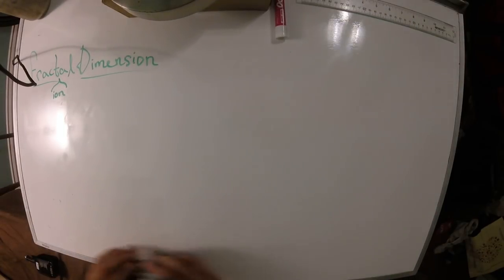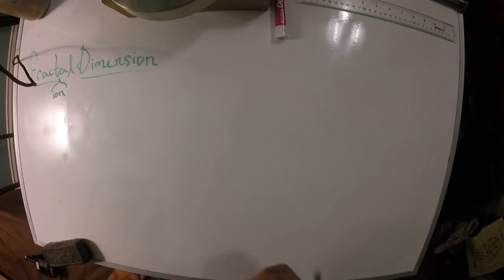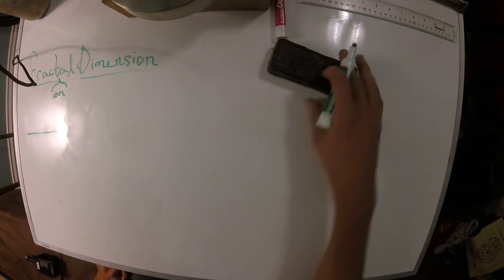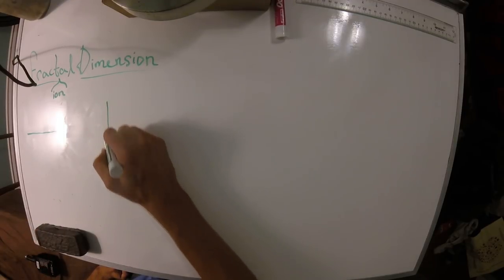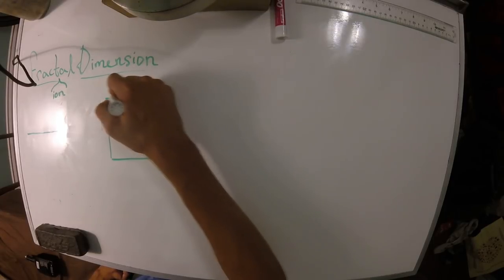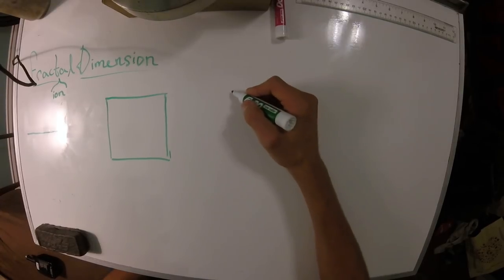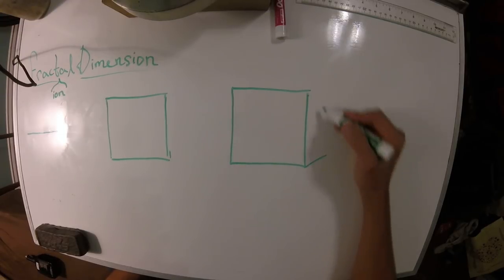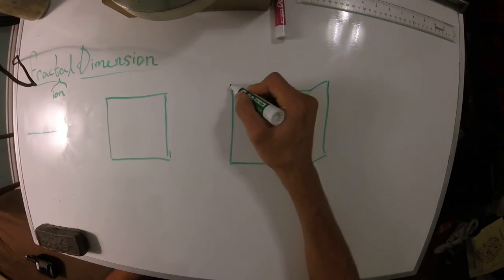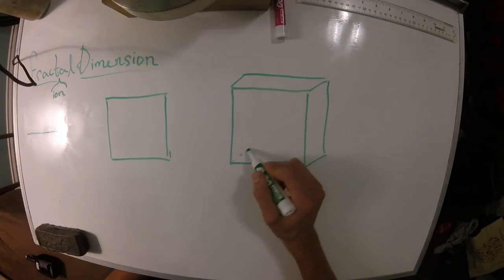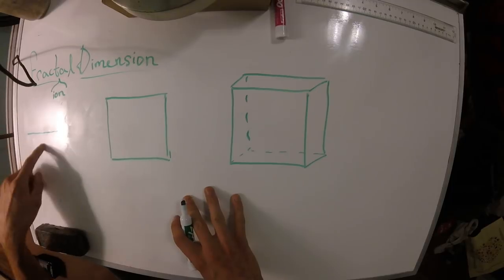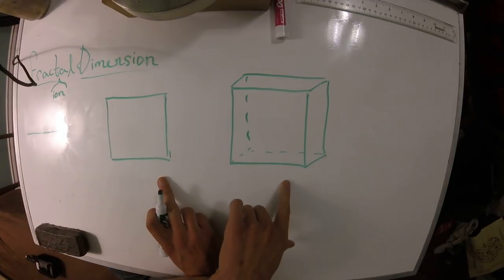We're going to start from the basics and I'll show you how we end up with this fractional dimension story. To do that, we're going to consider three shapes whose dimension we're very familiar with: a line, a square, and a cube. We're very familiar with the fact that this line would be one-dimensional, this square would be two-dimensional, and this cube would be three-dimensional.